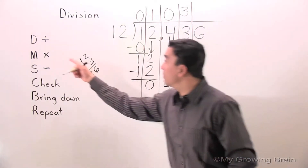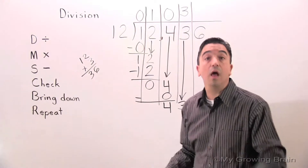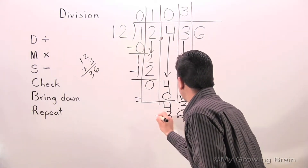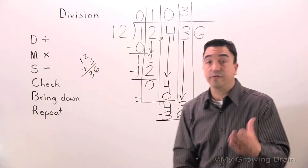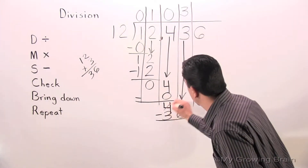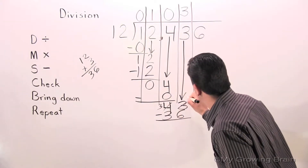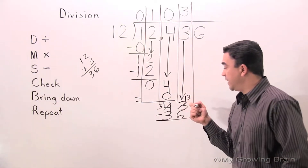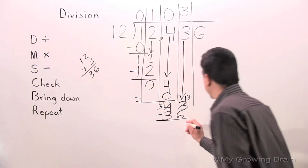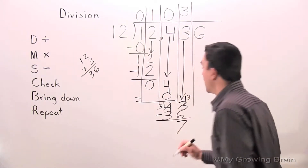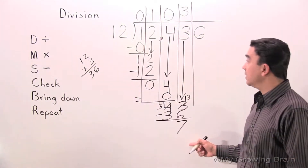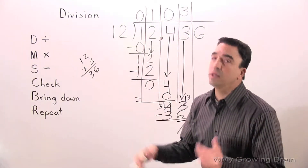Next step: Multiply. 12 times 3 equals 36. Next step: Subtract — regroup. 13 minus 6 equals 7. Next step: Check — 7 is less than 12. Keep on going.